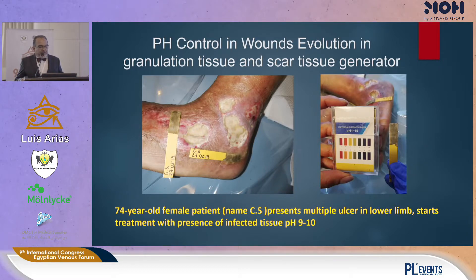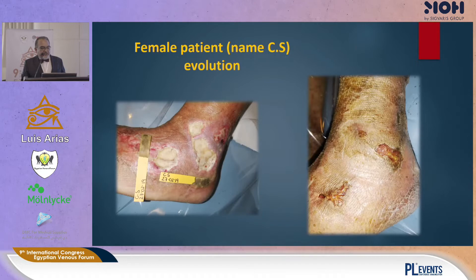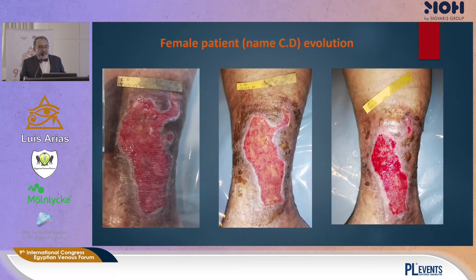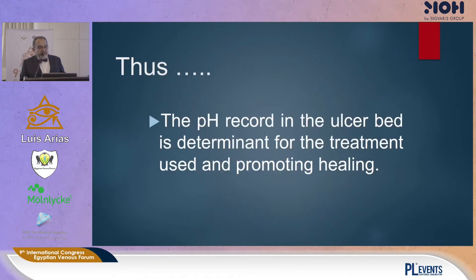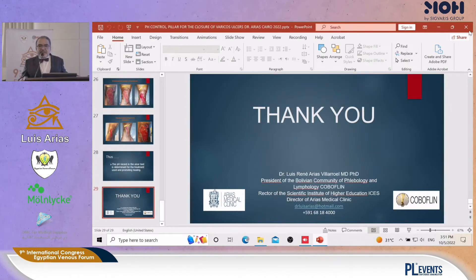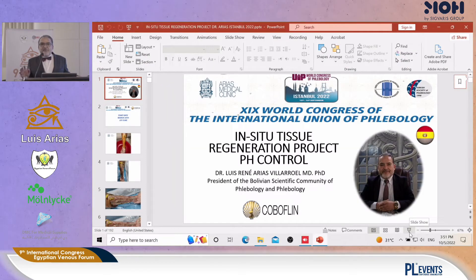This is a 74-year-old patient presenting with multiple ulcers in the lower limb. Treatment starts with infected tissue present and a pH between 9 and 10. We have many documented cases. The pH control record in the ulcer band is determined by treatment usage and promotes healing. I'd like to show you a timelapse — it's 190 pictures, each picture representing one second. Please pay close attention because it goes very fast. It shows the evolution using only pH control and compression.